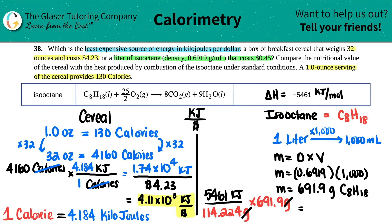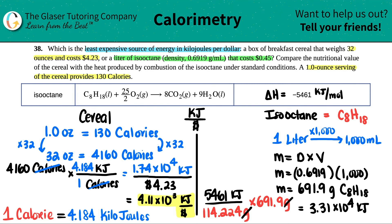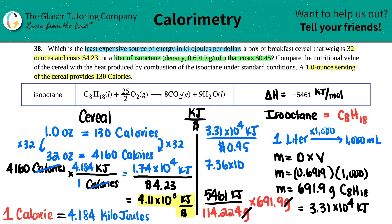That calculation gives us approximately 3.31 times 10 to the fourth kilojoules for one liter of isooctane. Now to get kilojoules per dollar, we divide by the cost of 45 cents, or 0.45. So 3.31 times 10 to the fourth divided by 0.45 gives us 7.36 times 10 to the fourth kilojoules per dollar.